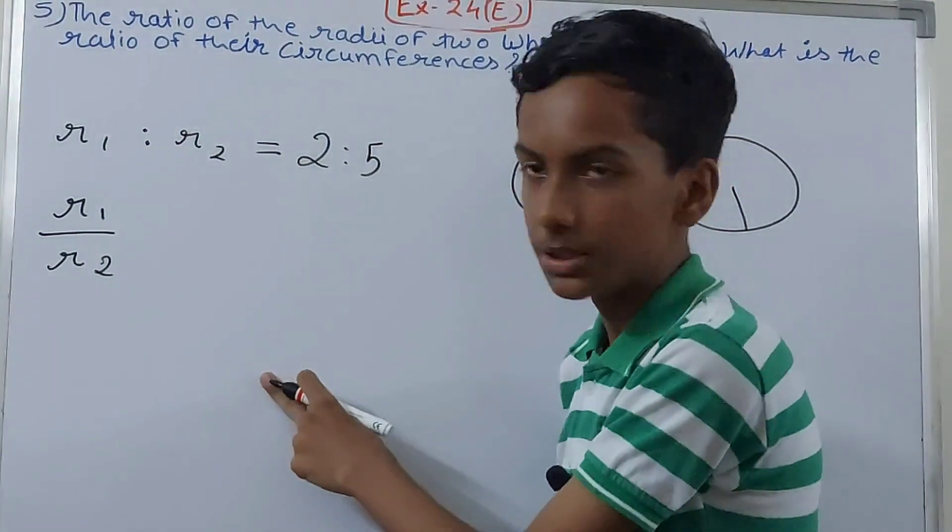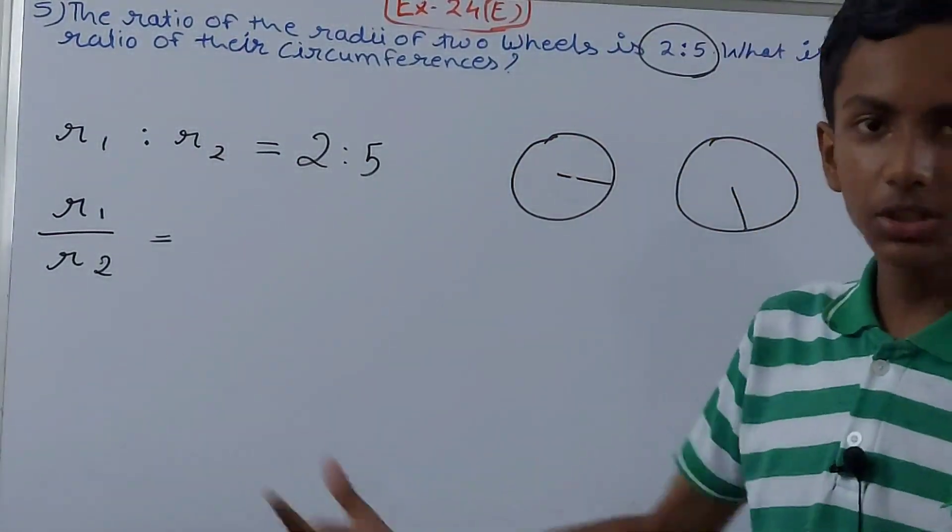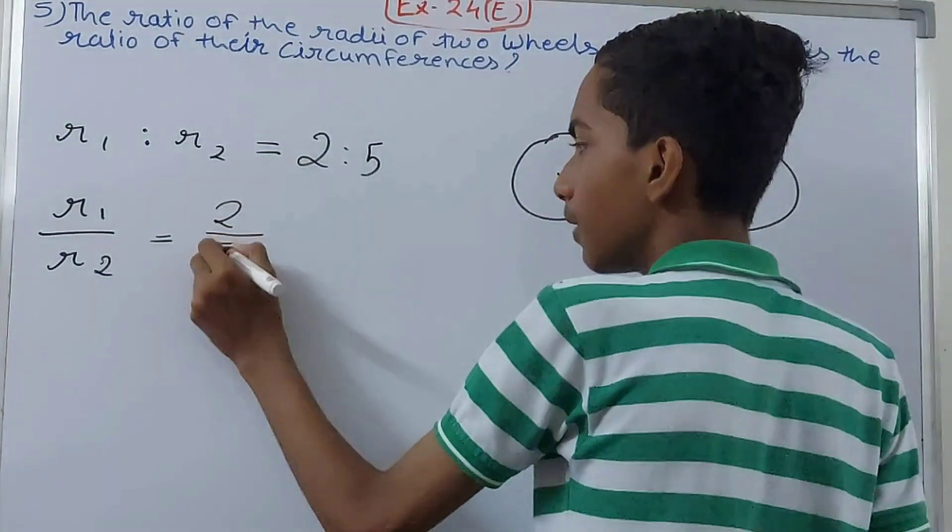I remove the 'is to' sign and put them in the form of a fraction. So what will happen to the other side? Same thing - that is two by five.